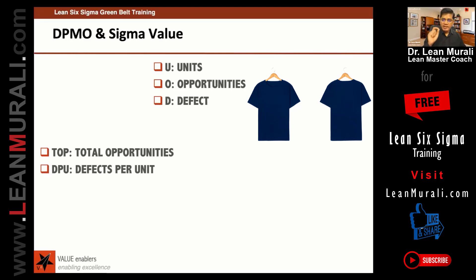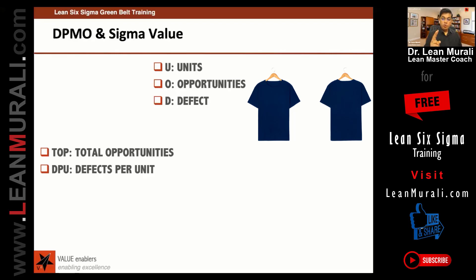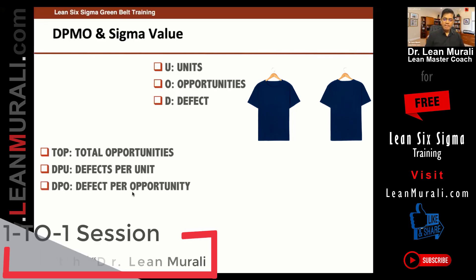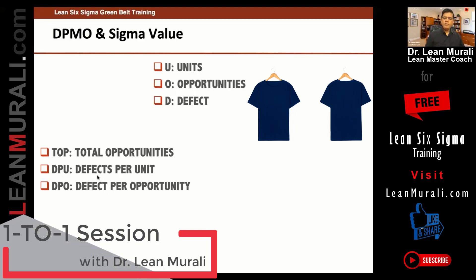Defects per unit: one shirt can have a maximum of two defects if there are two opportunities. Suppose one shirt has two defects — both color and size are not okay — and the other shirt is perfectly fine. There are two units; one shirt has two defects. So defects per unit is two divided by two units, which equals one. One shirt is defective, one shirt is good.